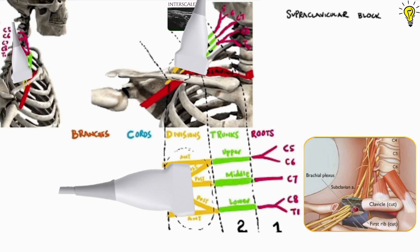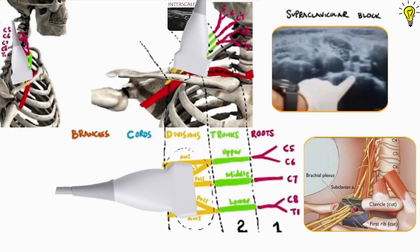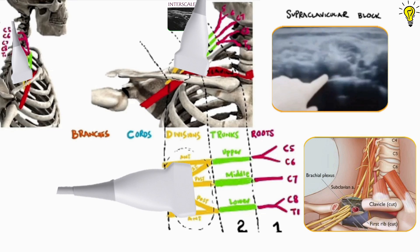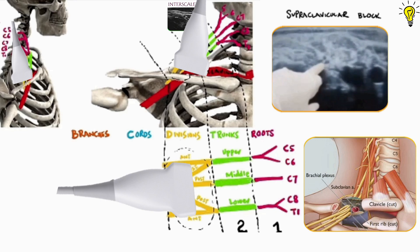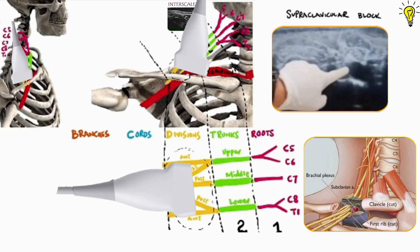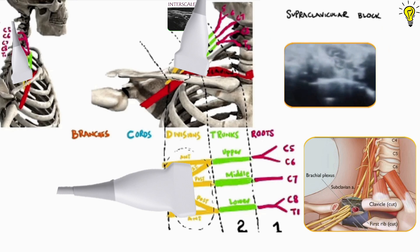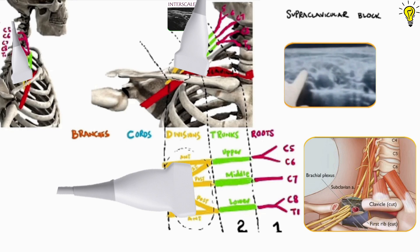Now on ultrasound screen, I see the pleural lining and drip shadows, the subclavian artery. These grape like structures are the anterior and posterior divisions of upper, middle and lower trunks. You can see how they are lateral to the subclavian artery and somewhat upper side.